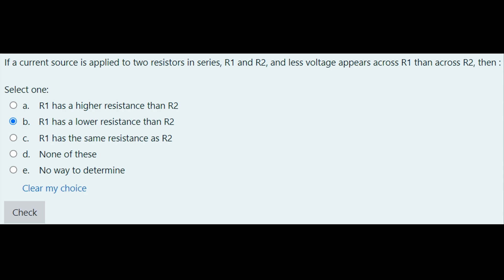For this question, we are told that a current source is applied to two resistors, R1 and R2, and less voltage is going to appear across R1 than R2. So what does that mean for R1s and R2s?